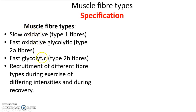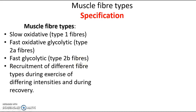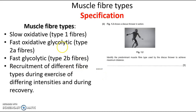The percentage or how much of the different types of fibres you have will dictate the types of activities that you do. So if you're someone who has a really high amount of slow oxidative fibres, this will dictate a certain activity — it might mean you're better at certain activities. If you have a high percentage of fast glycolytic type 2b fibres, this might mean you're good at other activities.